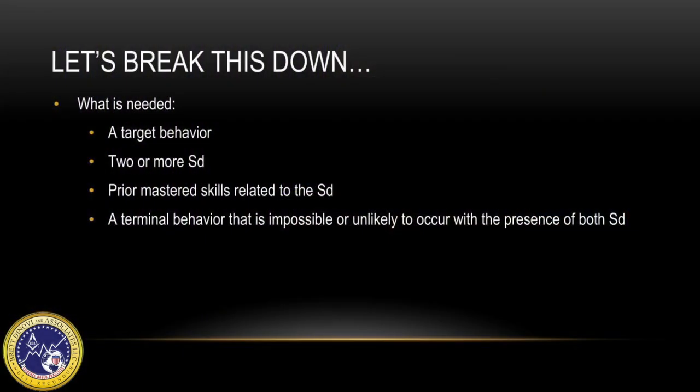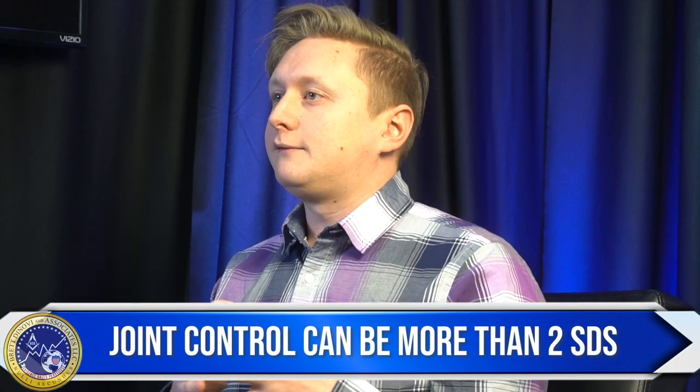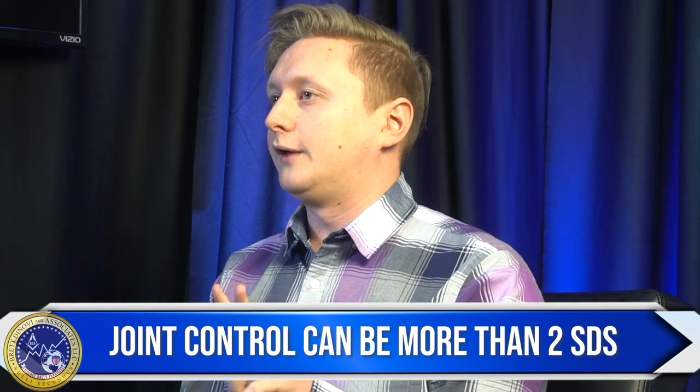Let's break down the different parts of joint control. First we have our target behavior. What's really important is that any steps leading up to this target behavior need to be mastered — they need to be part of your learner's repertoire, otherwise it's going to be a lot harder. For example, if I need to go in the kitchen and find a blue cup but I don't know how to identify the color blue, I'm not going to be successful. By the definition of joint control it implies there are only two SDs, but you can have more than that — clinically we typically just talk about the two SDs linked together.